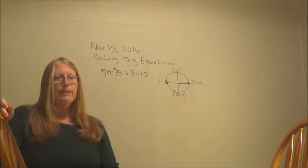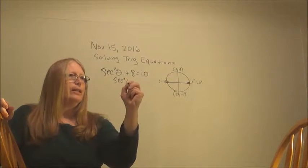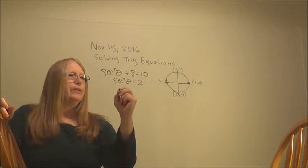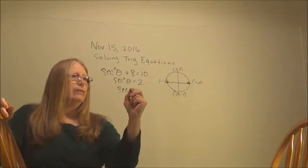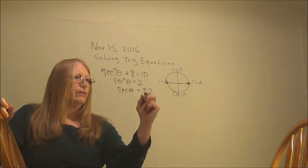Alright, write this one down and move the 8 over. And I get secant squared theta equals 2. And I take the square root of both sides.